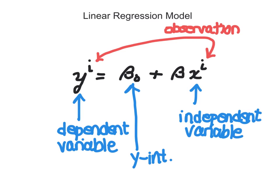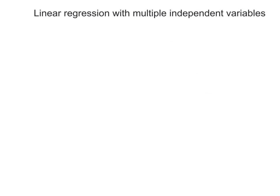This is the case when we have only one independent variable. What we'd like to reconsider is linear regression with multiple independent variables. So let's imagine we have a set of independent variables: x sub 1, x sub 2, x sub 3, and so forth, where each one represents a different domain or different set of independent variables.